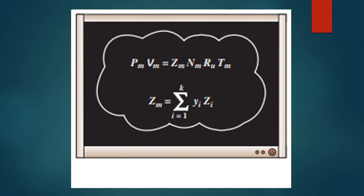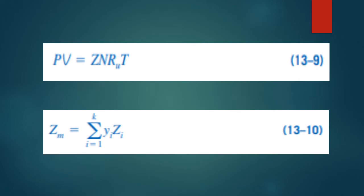One way to do this is to use more exact equations of state instead of the ideal gas equation. Another way is to use the compressibility factor, where P_M · V_M = Z_M · N_M · R_u · T_M and Z_M = Σ(Y_I · Z_I). The compressibility factor of the mixture Z_M can be expressed in terms of the individual compressibility factors Z_I by applying equation 13-9 to both sides of Dalton's or Amagat's law, where Z_I is evaluated at T_M and V_M (Dalton's) or T_M and P_M (Amagat's).